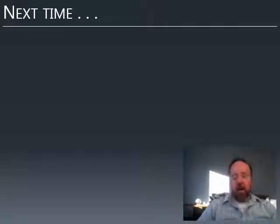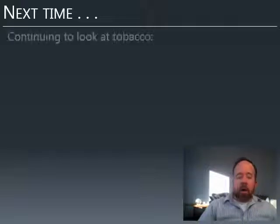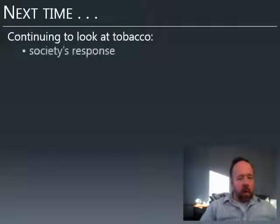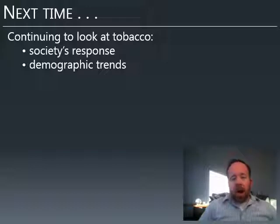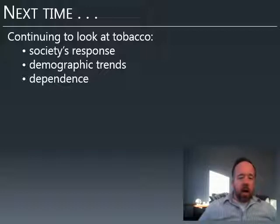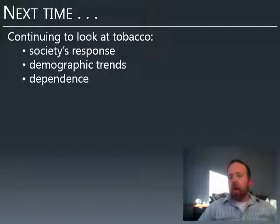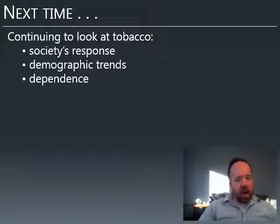Okay, so that is it for today. That is our coverage of the history of tobacco and the effects of tobacco. Next time, we'll continue to look at tobacco at a more social level — what has society's response been, especially in terms of regulation? Also, what are the demographic trends? Who smokes, who's likely to smoke, why did they start, and what form of tobacco are they using? And we'll discuss dependence — why is it so easy to become dependent upon nicotine, and once dependent, what can you do? That will all be discussed next time.